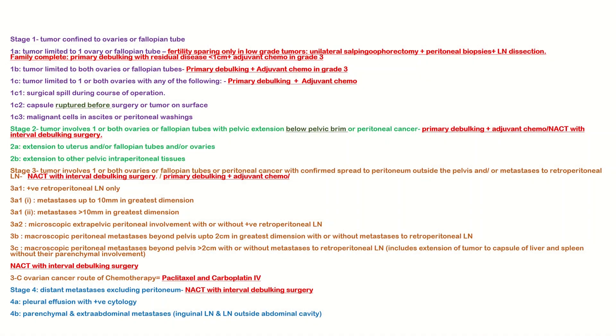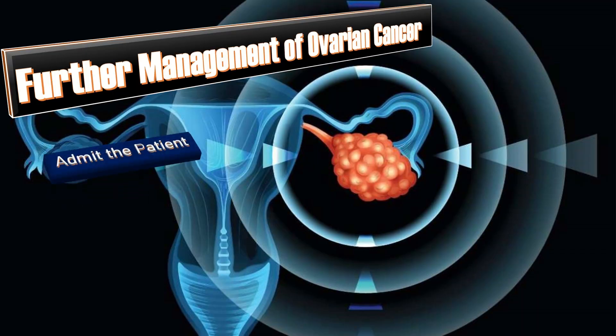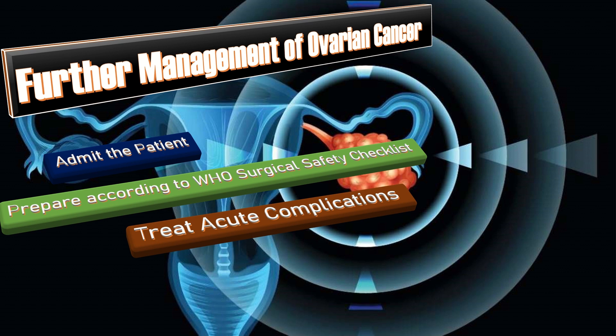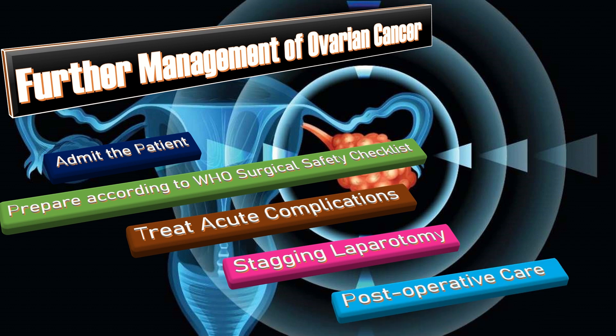The stage-wise management of ovarian cancer is explained in this chart. For further management, admit the patient, prepare according to the WHO surgical safety checklist, and treat any acute complications first. After discussion with the multidisciplinary team, when staging laparotomy is advised, perform it under aseptic conditions using appropriate technique, then provide appropriate post-operative care and arrange follow-up.